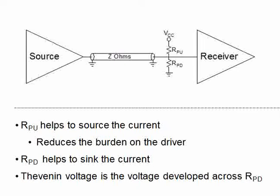And then as we said, apart from the termination, these are also acting as the pull-up and pull-down. While RPU acts as the source of current, RPD helps to sink the current. So what advantage do we get?